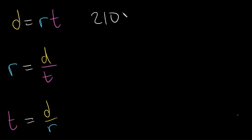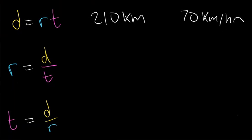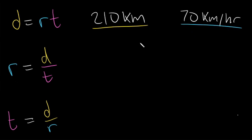How long would it take to travel 210 kilometers at a speed of 70 kilometers per hour? Here we have kilometers, which is a distance unit, and kilometers per hour — distance per time — so that's our rate. Let's underline that in blue. We have a distance and a rate, so we need to solve for time.